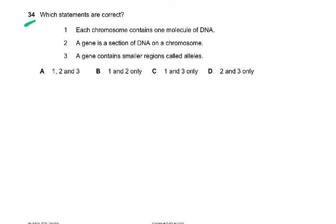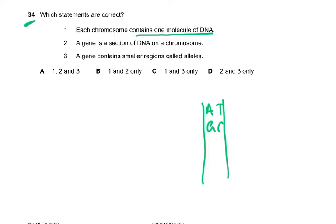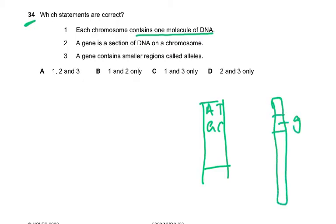Question 34 asks which statements are correct. First: each chromosome contains one molecule of DNA — yes, that's correct. You see this double-stranded DNA; this is one molecule of DNA made up of two strands. So get this right: one molecule of DNA, two strands. Second: a gene is a section of DNA on a chromosome — yes, the gene is a section from here to here on a chromosome.